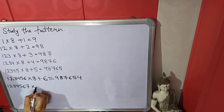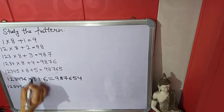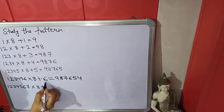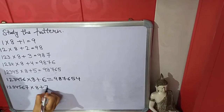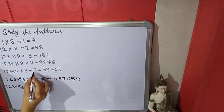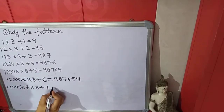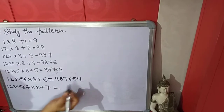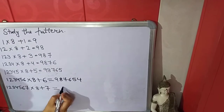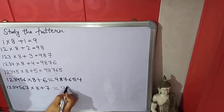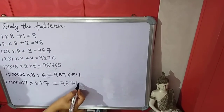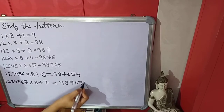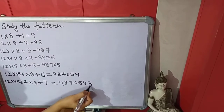Then multiply. The 8 will remain the same. After 6, the number 7 will come, so the sequence becomes 1, 2, 3, 4, 5, 6, 7. The result on the right side will now be 9, 8, 7, 6, 5, 4, 3 — continuing the backward counting pattern.